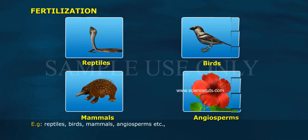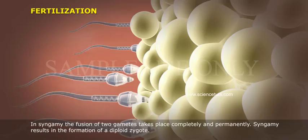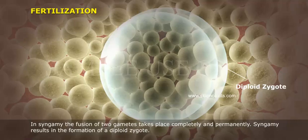The most vital events of sexual reproduction are perhaps the fusion of gametes. Syngamy is the most common type of sexual reproduction in plants and animals. In syngamy, the fusion of two gametes takes place completely and permanently, resulting in the formation of a diploid zygote.